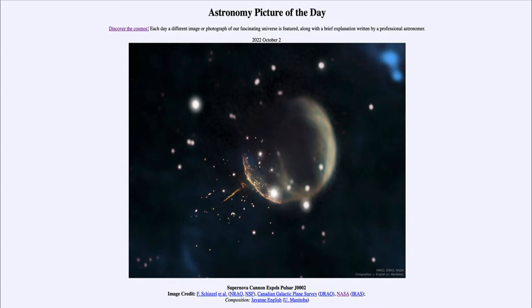Well, it is titled Supernova Cannon Expels Pulsar J0002. So what do we see here? Well, this is an example of a supernova remnant, a remnant of a star that would have been seen to explode 10,000 years ago or so. And the remnant here represents the destruction of a star in a massive explosion.